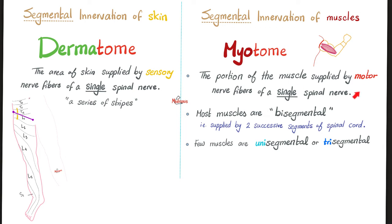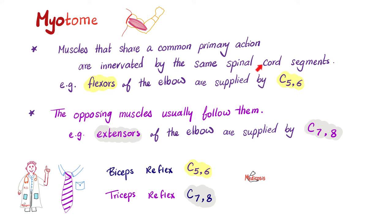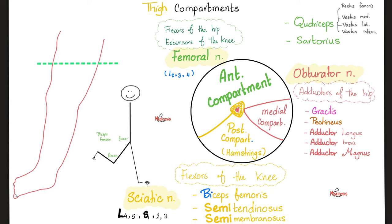Back to myotomes: it's the portion of the muscle supplied by motor nerve fibers of a single spinal nerve and single spinal segment. Muscles that have the same action are innervated by the same spinal cord segment — for example, flexors of the elbow are supplied by C5 and C6. Moreover, opposing muscles are usually supplied by the segments that follow: extensors of the elbow are supplied by C7 and C8. This ties into deep tendon reflexes: biceps reflex checks C5 and C6; triceps reflex checks C7 and C8. Your body follows patterns — that's why we're able to study it.